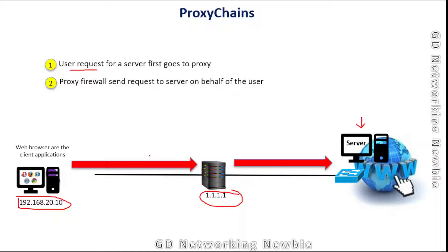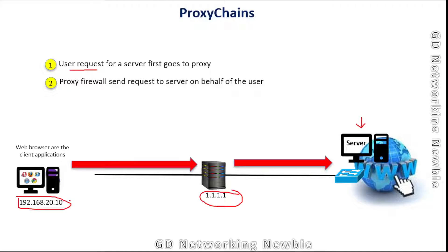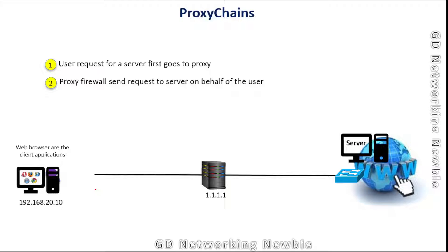So it means we are hidden from the server — they can't see us, they can't identify our IP address. That's what a proxy is. But what is a proxy chain? If someone tries to trace back where the request is coming from, that is of course possible.